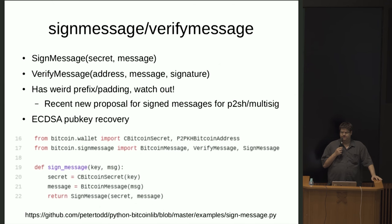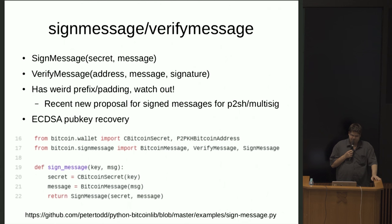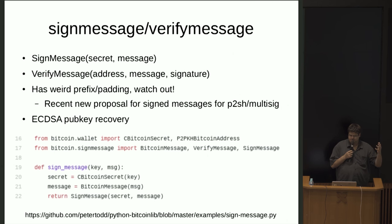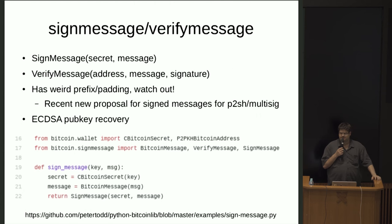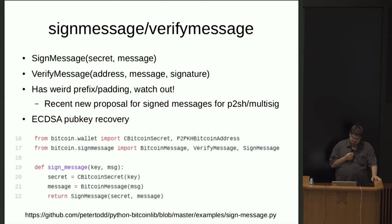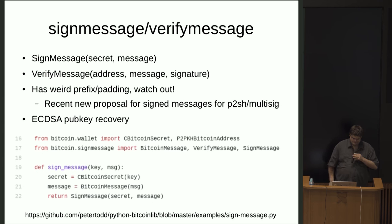It uses something called ECDSA pubkey recovery. Interestingly, in Ethereum, unlike Bitcoin which uses UTXOs, it uses credits and debits and there's actually no from address. The address from which an account is debited in Ethereum is derived using ECDSA pubkey recovery — similar to sign message in Bitcoin — to derive the from account from the signature on the Ethereum transaction. The URL at the bottom of the screen is an example of using sign message and verify message.